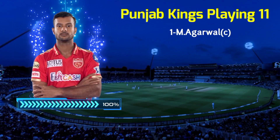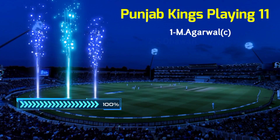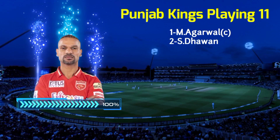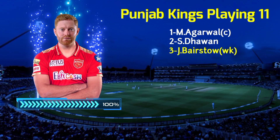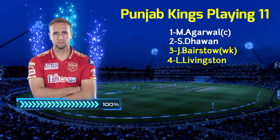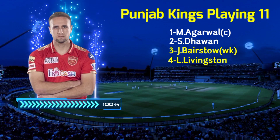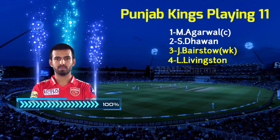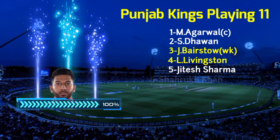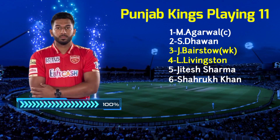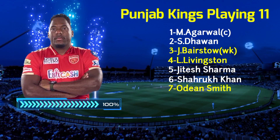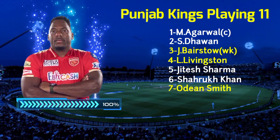Punjab Kings Playing 11 vs Delhi Capitals. No. 1: Mayank Agarwal, Captain. No. 2: Shikhar Dhawan, Left-Hand Batsman. No. 3: Jonny Bairstow, Right-Hand Batsman. No. 4: Liam Livingstone, All-Rounder. No. 5: Jitesh Sharma, Right-Hand Batsman. No. 6: Shahrukh Khan, Right-Hand Batsman. No. 7: Odean Smith, All-Rounder.